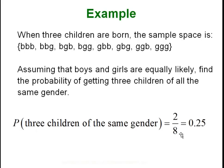Going back to the having-children scenario, here is our sample space: the eight different ways you can have three kids, assuming boys and girls are equally likely. They want to find the probability of getting three children of the same gender. Looking at the sample space, three boys and three girls are the only outcomes satisfying that criterion, so it's two out of eight, which reduces to one fourth, or .25, or 25 percent.